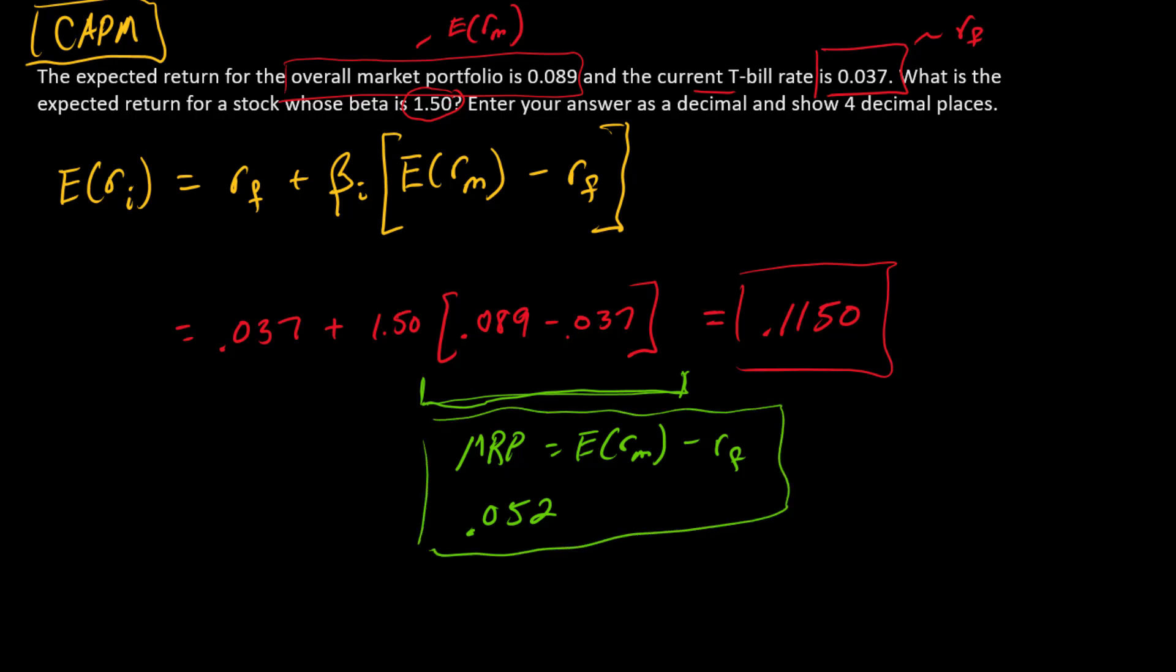And so in the problem, I could have, instead of giving you expected return on the market and the risk-free rate separately, I could have just given you the market risk premium. If that were the case, then instead of doing this subtraction term, you just put 0.052 right there. So that's variation number one.